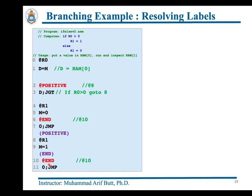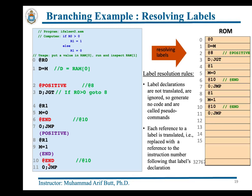How are labels resolved by the assembler? The label declarations — POSITIVE before line 8 and END before line 10 — shown in purple are not translated; they generate no machine code, which is why they are called pseudo commands. However, references to these labels are translated to the instruction number following the label declaration: '@POSITIVE' at address 2 becomes '@8', '@END' at address 6 becomes '@10', and '@END' at address 10 also becomes '@10'.